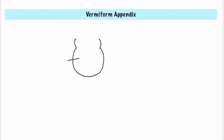This structure arises from the posteromedial wall of the cecum. It arises just 2 cm below the ileocecal orifice. If this is the cecum and this is the ileum, the base of the appendix is just 2 cm below the ileocecal orifice.